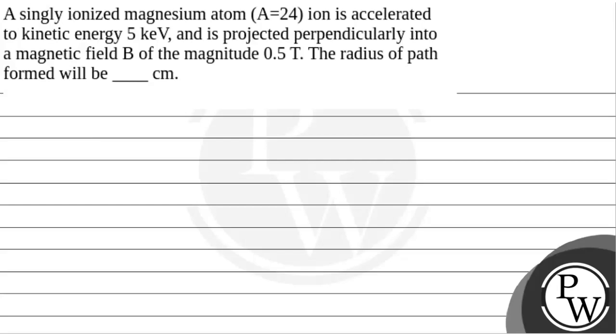Hello Watcho, let's read the question. The question says that a singly ionized magnesium atom, A equals 24, ion is accelerated to a kinetic energy 5 kilo electron volt and is projected perpendicularly into a magnetic field B of magnitude 0.5 tesla. The radius of path formed will be 10 cm.